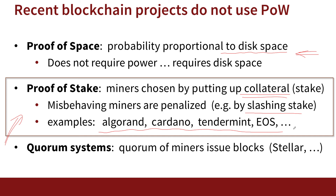With proof of stake, no energy is wasted — we use stake to choose the miners. Finally, there's another approach called quorum systems, where instead of choosing miners at random, we designate miners that we trust. New blocks are issued by a quorum of miners — perhaps 20 miners distributed all over the world, run by large reputable banks — where you simply trust them to run the blockchain correctly. Stellar is a good example. No energy is wasted; the blockchain is managed by a collection of miners that users decide to trust. That's another example of a consensus system.